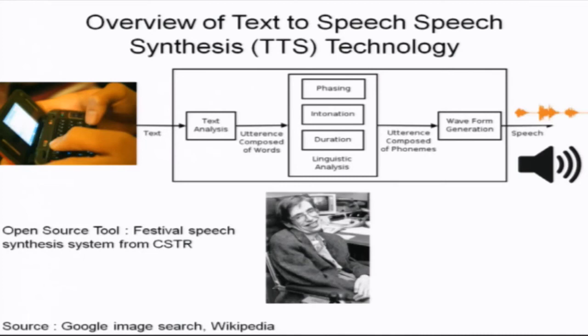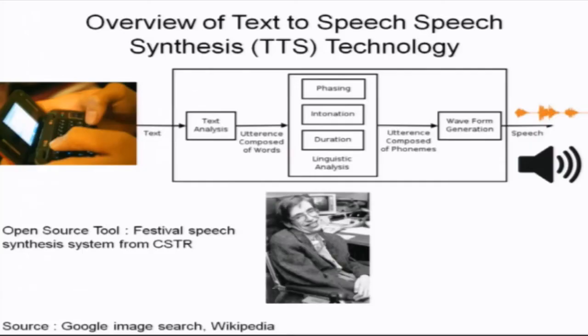For those technically inclined, there are open source tools available. The Festival Speech Synthesis System is software you can download, install, pipe in text, and hear the result. It allows you to choose a male or female speaker, and select uniform or diphone synthesis. One classic example of TTS being used is by the well-known physicist who communicates entirely through a speech synthesizer — a prominent real-world demonstration of this technology.